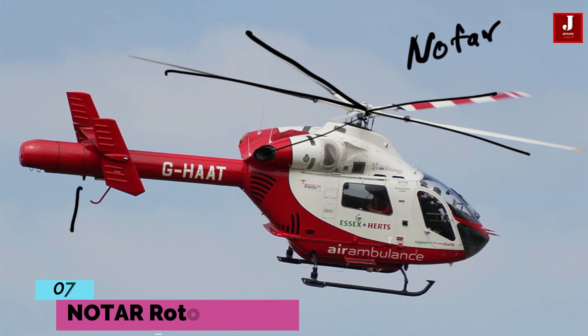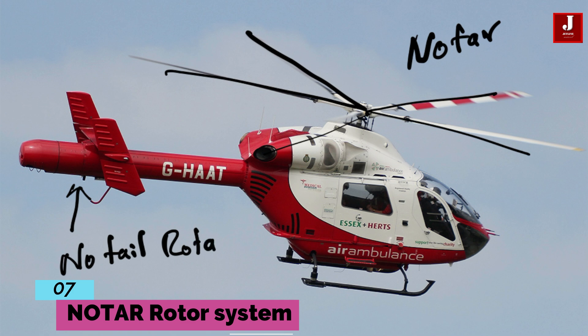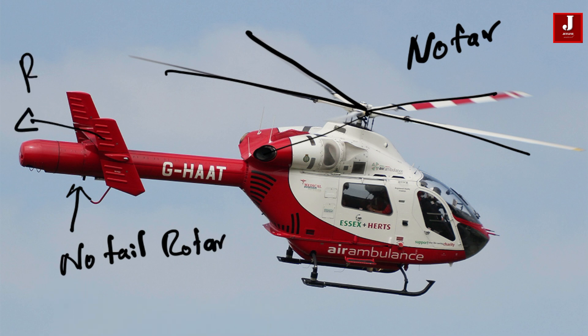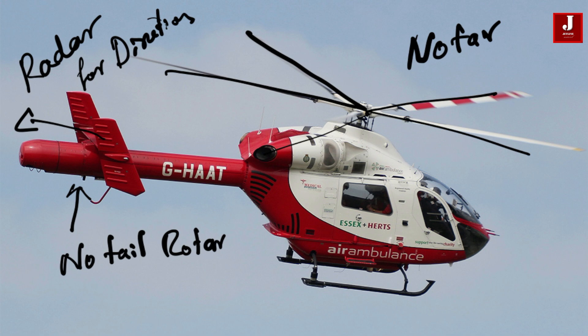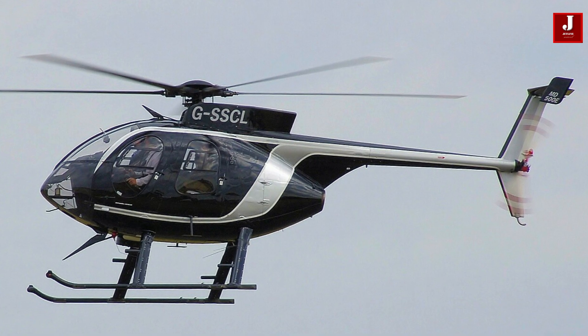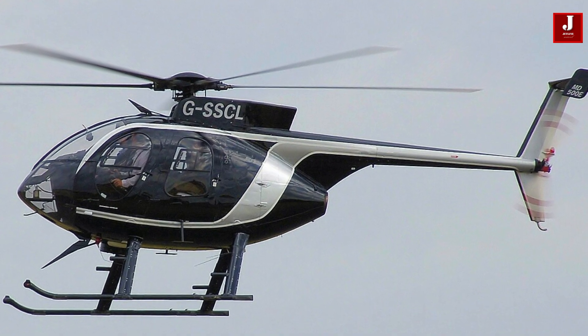Lastly, the NOTAR system replaces the traditional tail rotor with a ducted fan and directional airflow to counter the torque from the main rotor. It works by pushing air through the tail boom and out through side vents, creating thrust that stabilizes the helicopter. This design reduces noise, boosts safety, and cuts down on maintenance. This system is found in helicopters like the MD-520N and MD-902 Explorer.